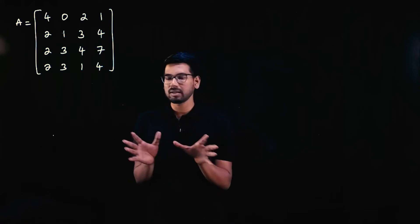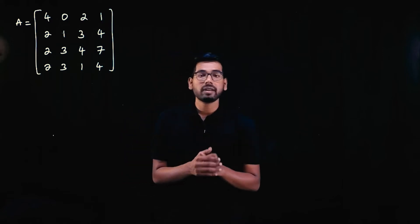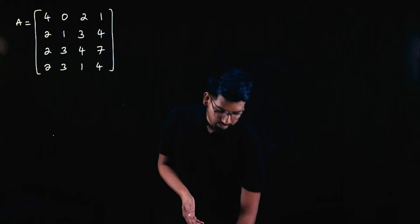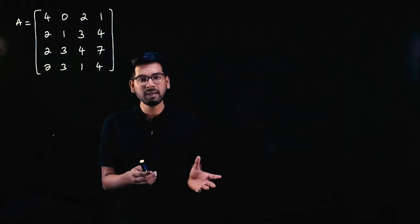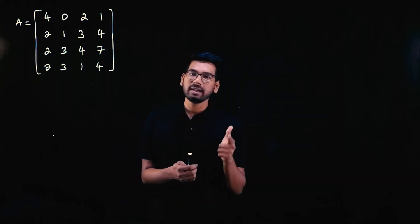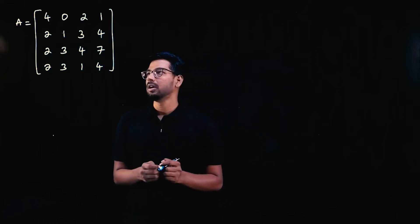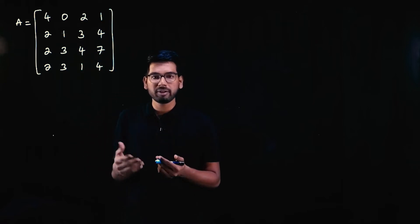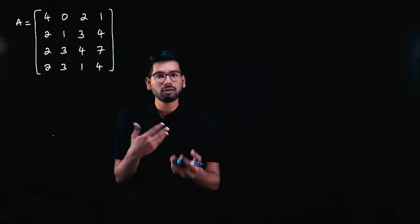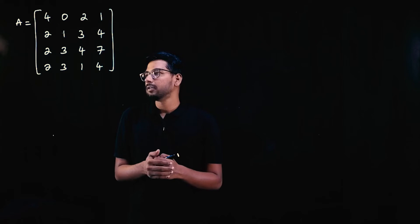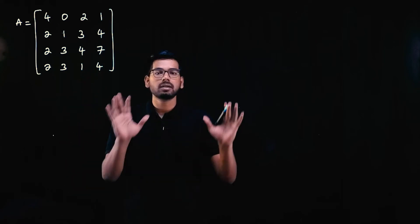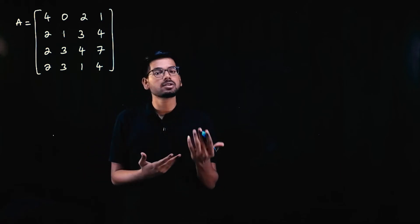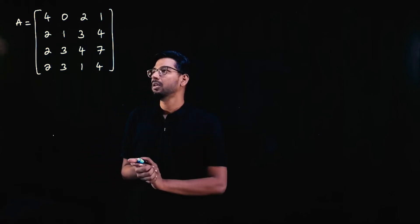By this time I think you know the definition of rank. Rank is the number of non-zero rows after row operations. Row operations are: exchange, scaling, and combination of two rows. After all possible row operations, making all possible elements zero, the number of non-zero rows remaining is the rank.